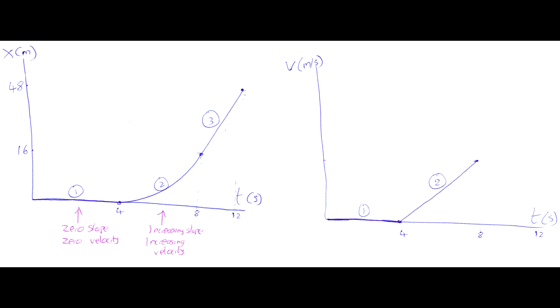So for section two, between four and eight seconds, we can draw a gradually increasing velocity. Section three is a diagonal line — it's a constant slope. It doesn't get steeper, it doesn't get less steep. If it has a constant positive slope, then it has a constant positive velocity. So we can draw a positive velocity on the velocity-time graph from t = 8 seconds to t = 12 seconds. By thinking about the slope, we now have the shape of the graph.